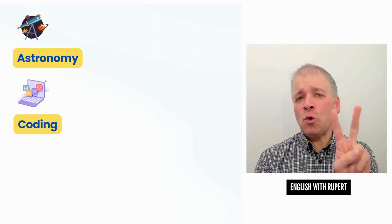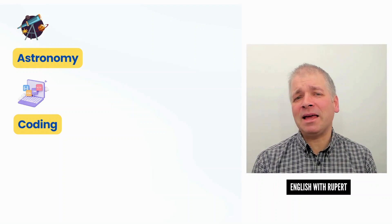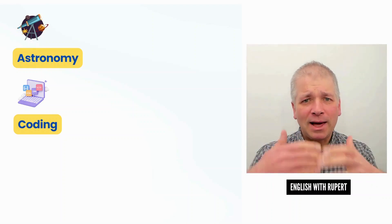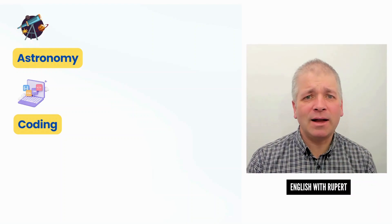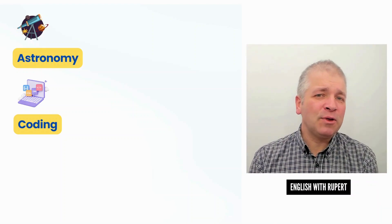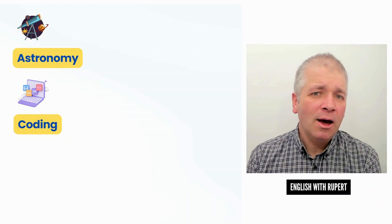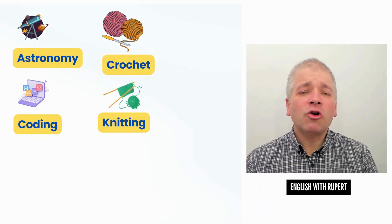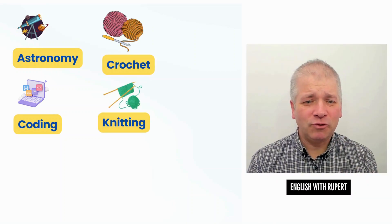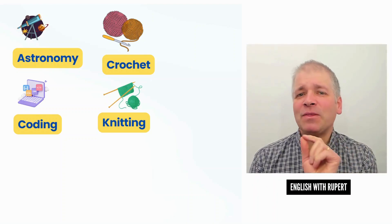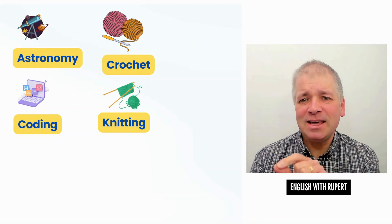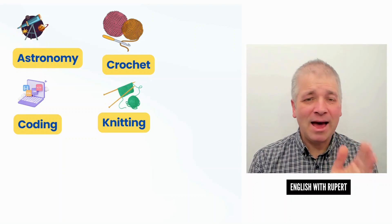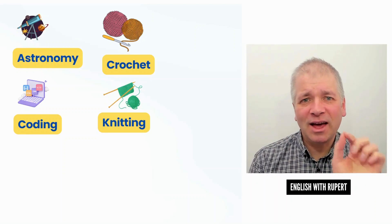Do you remember those two words for making things with a needle and thread — making clothes, blankets, maybe a hat? One began with C, one began with K. Here they are: crochet, which remember has that hook at the end and the silent T. And knitting — because it's K-N, it has that silent K.